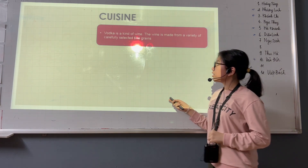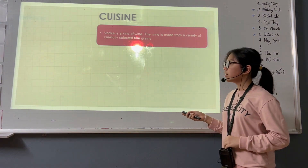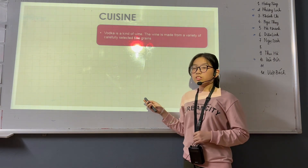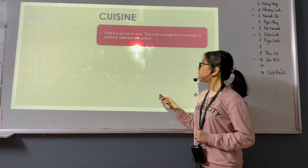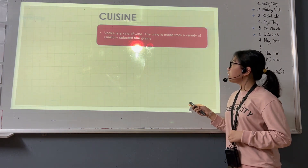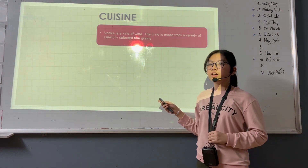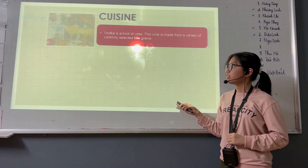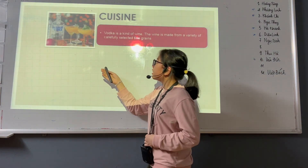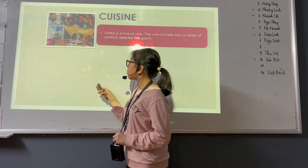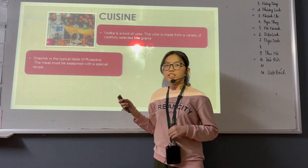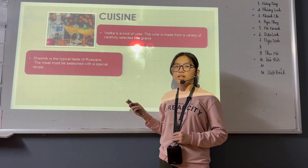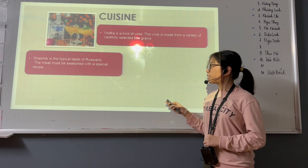Next is the cuisine. Vodka is a popular drink in Russia. The vodka is made from a variety of carefully selected fine grains. Shashlik is the typical taste of Russia, and the meat must be seasoned by a special recipe.